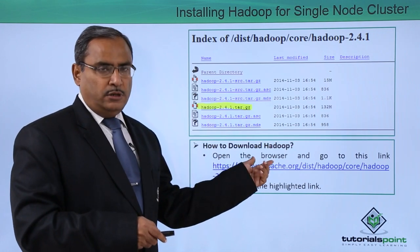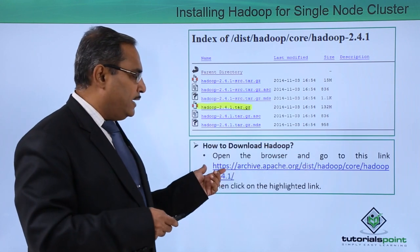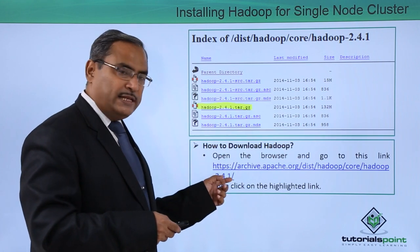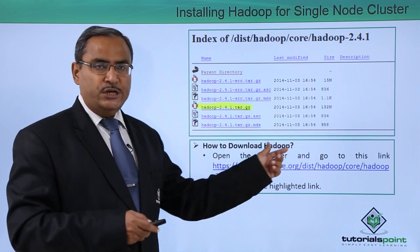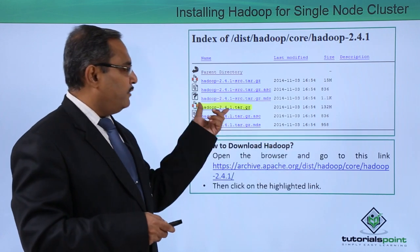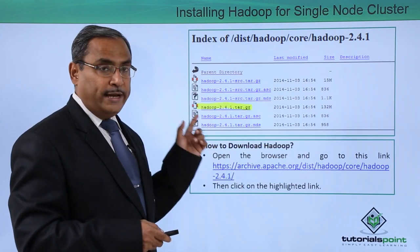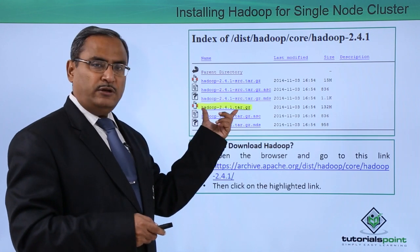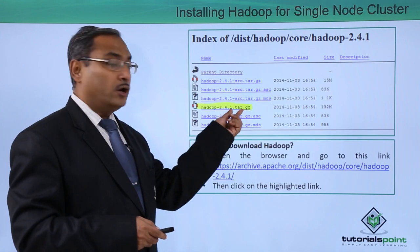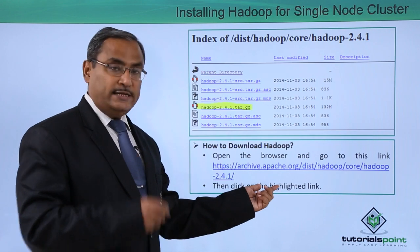Now open the browser. In Linux you will have a browser available. Open the browser and go to the given link. Copy this particular link, type it in the browser URL, and then click on the highlighted link. This web page will open and it contains the file 'hadoop-2.4.1.tar.gz'. This is the file which has to be highlighted and clicked to download.